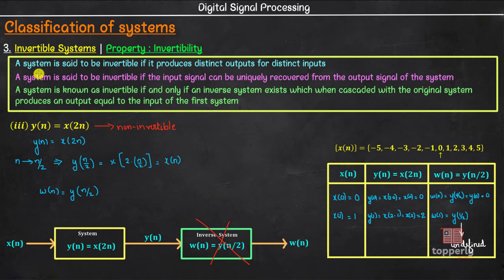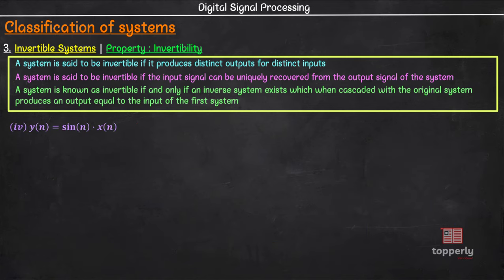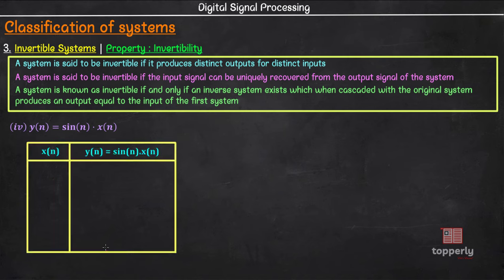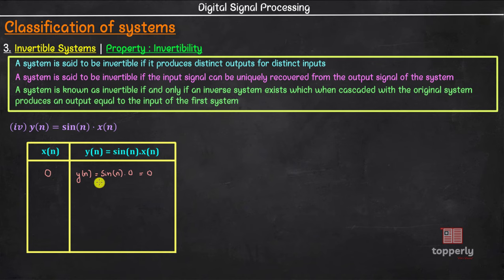I hope you now understand the significance of the many definitions of invertible systems given earlier. Moving to the next question, we have y[n] = sin(n) · x[n]. This is a very important example. First, let us make the input-output table. We will try giving numerical values as input. We don't know the value of sin(n) exactly when x[n] = 0, because we don't know at which instance n the input is 0 — maybe x[−50] = 0, maybe x[10] = 0. We simply don't know.